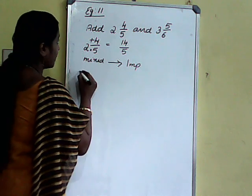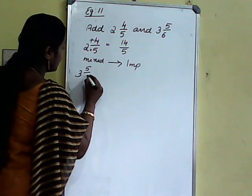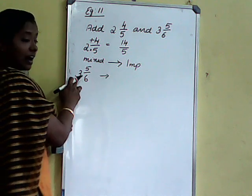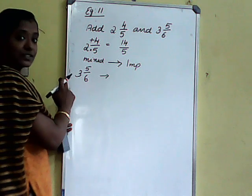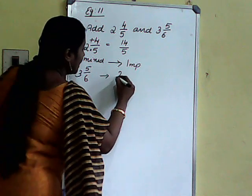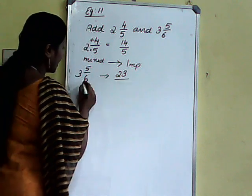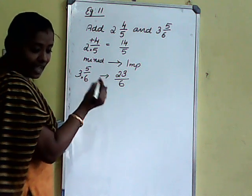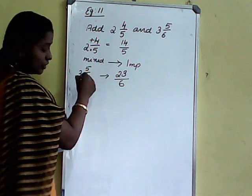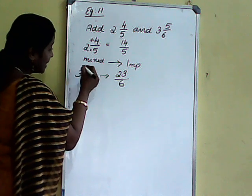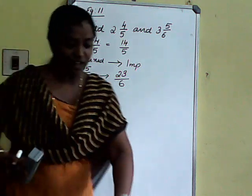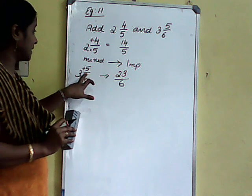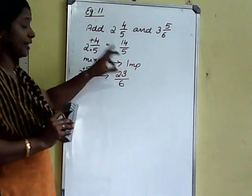The next one: 3 and 5 by 6 — how to solve it? That is 6 threes are 18, 18 plus 5 is 23. That is 23 divided by 6 — here it is multiplication, that answer plus 5. So we get 23 by 6 and 14 by 5.